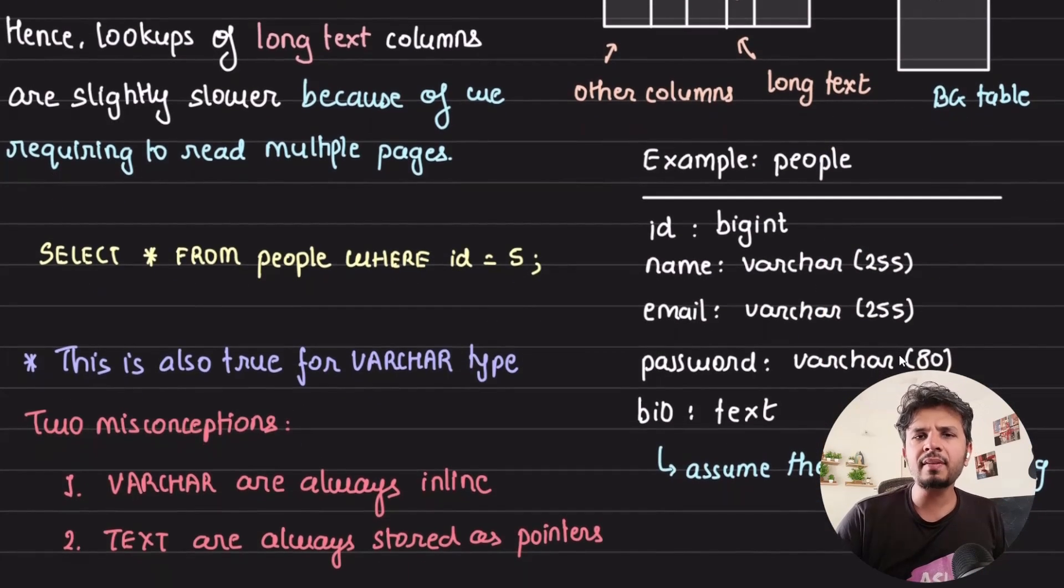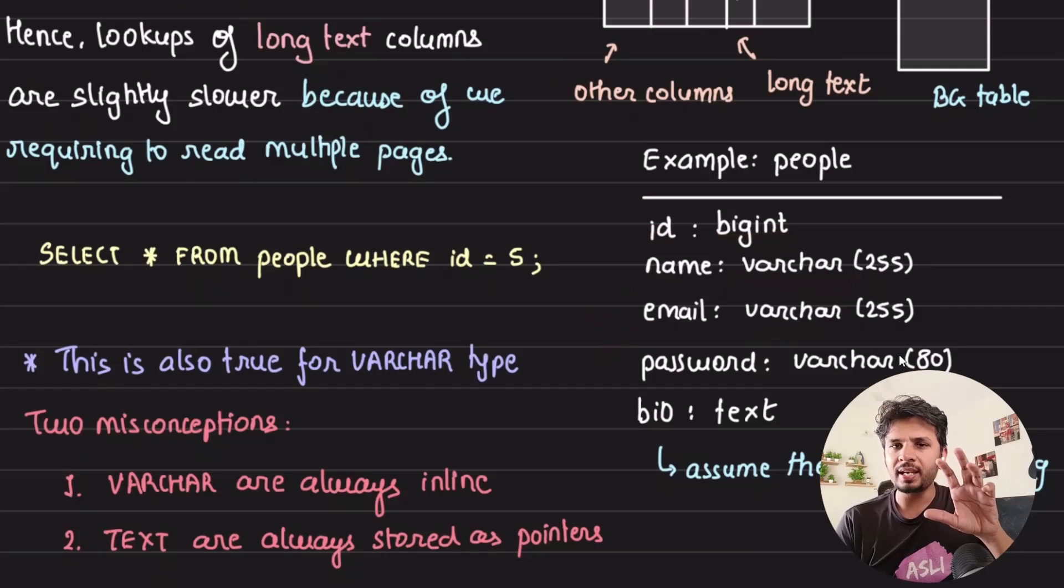For example, let's say I have a table called people with five columns: id which is an integer, name varchar, email varchar. You can clearly see where I would want to match or index a column, I'm using varchar. Password varchar. Bio could be large, so using text there.